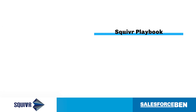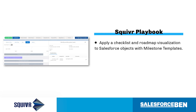Moving on to Squiver Playbook. Milestone templates and milestone headers are two Squiver custom objects that will enable you, as an admin, to apply a checklist and roadmap visualisation to Salesforce objects. This makes your team's success plan visible directly on the Salesforce record.